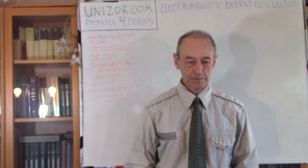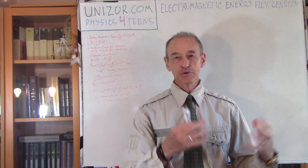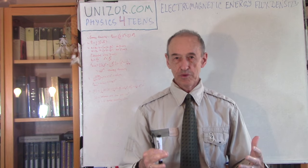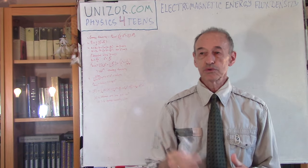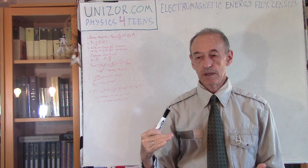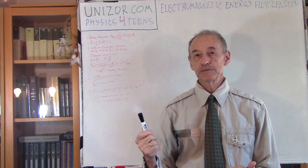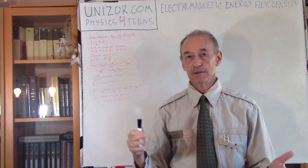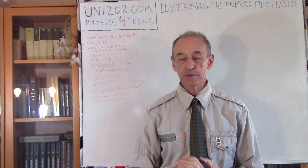Hi, I'm Zor. Welcome to Unizor Education. Today's lecture will be based on many previous lectures, using material we have discussed before to come to some agreement between different formulas. This lecture is part of the course called Physics for Teens, presented on unizor.com. Within the course there is a part called Waves, and within that part there is a chapter about electromagnetic waves. This is one of the last lectures in that group related to electromagnetic waves.